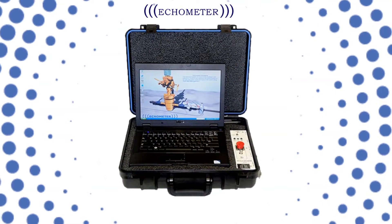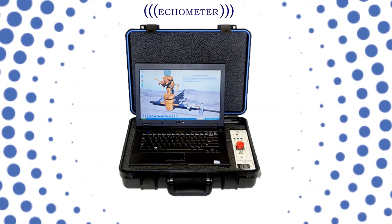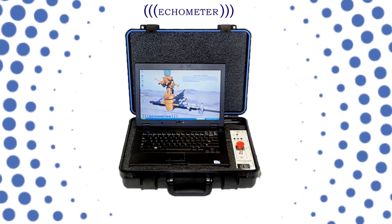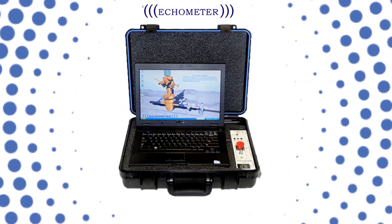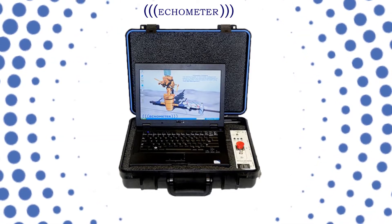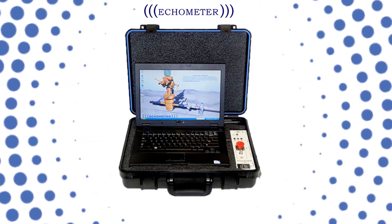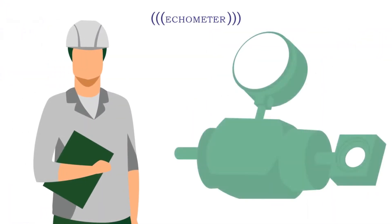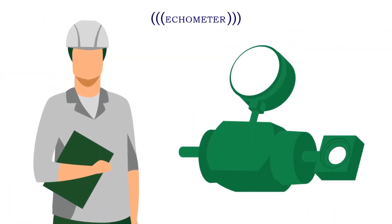Echometer is a versatile technology that can be used from surface to measure static and dynamic fluid level, encasing for wells with sucker rod, electrical submersible, and progressive cavity pumps. From the fluid level, Echometer estimates the static and dynamic flowing bottom hole pressures needed for well analysis.